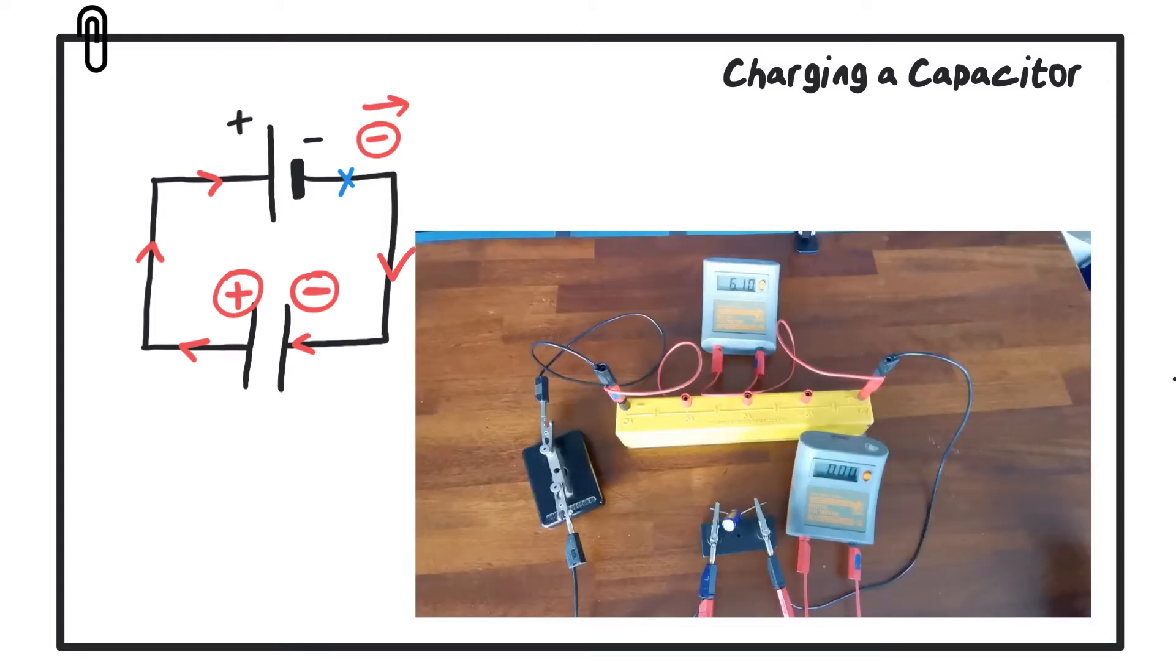The rate at which this capacitor charges will depend on the capacitance of the capacitor itself and also the resistance of the circuit. If there's very little resistance in the circuit, the capacitor will charge really quickly.